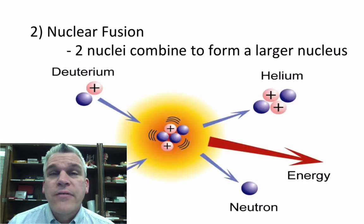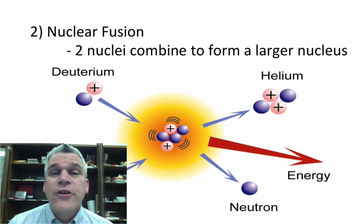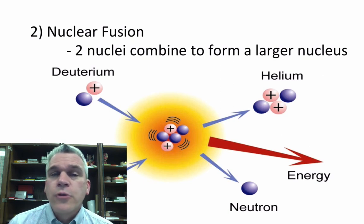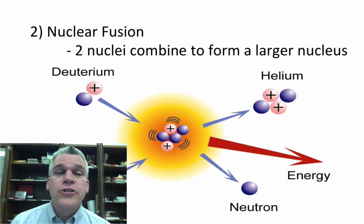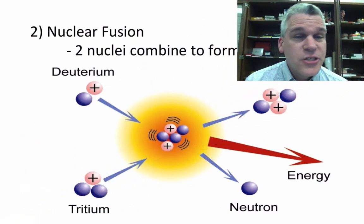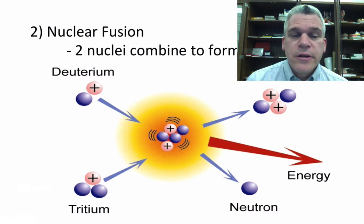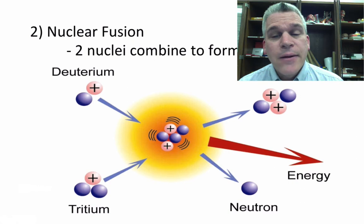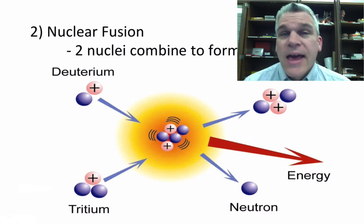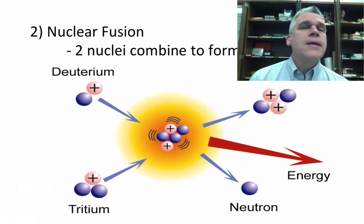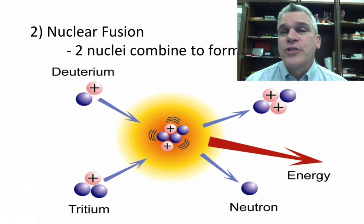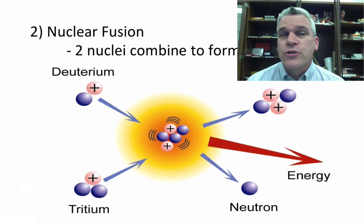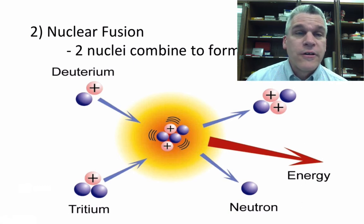The other type of nuclear reaction is nuclear fusion. This is where two nuclei combine to form a larger nucleus. For instance, we see in the sun deuterium and tritium slamming together, forming a helium atom and releasing a neutron, as well as releasing a tremendous amount of energy. A lot more energy is released in nuclear fusion than with nuclear fission.